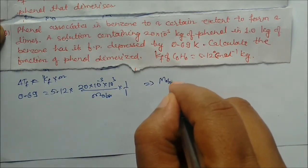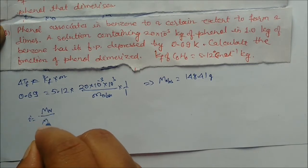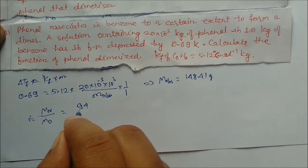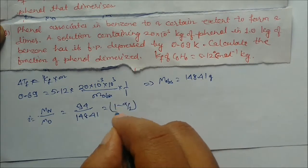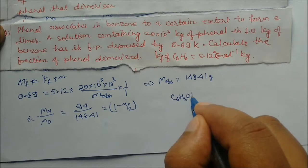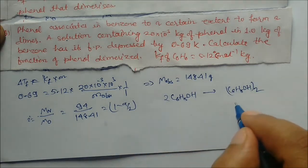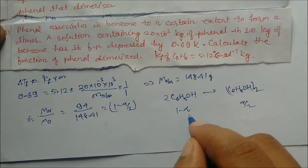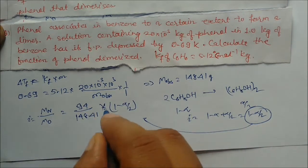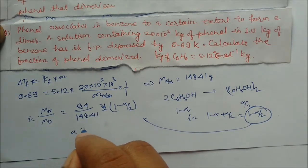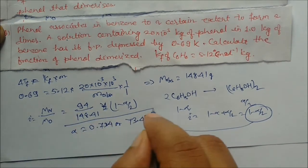Solving gives M_observed = 148.41 g/mol. Then i = M_normal / M_observed = 94 / 148.41. Since phenol dimerizes, i = 1 − α/2. Setting 94/148.41 = 1 − α/2 and solving gives alpha = 0.734, or 73.4 percent. This is the fraction of phenol that dimerizes.